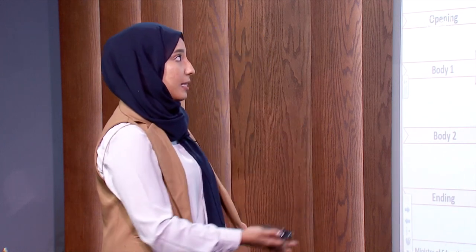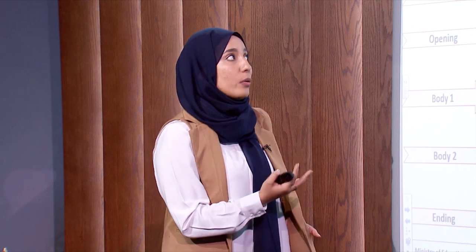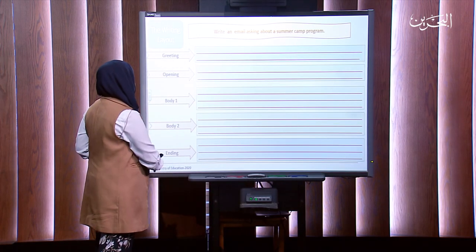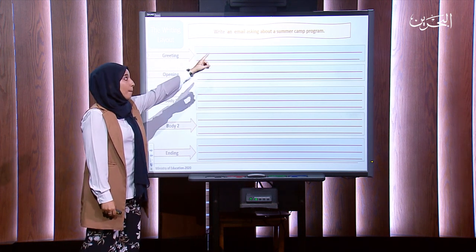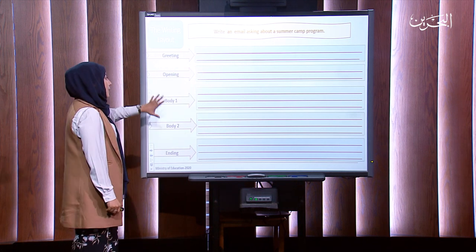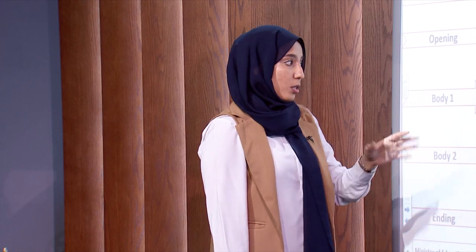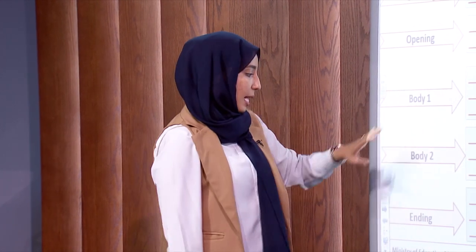Now, similarly, just like this email, I am expecting you to write me an email asking about a summer camp program. I want you to follow the same structure: greeting in the formal manner, opening the statement and directly mentioning that it's about the summer camp. In the body, you can ask your questions in two parts or merge them into one — it's your call of preference. And then the ending.